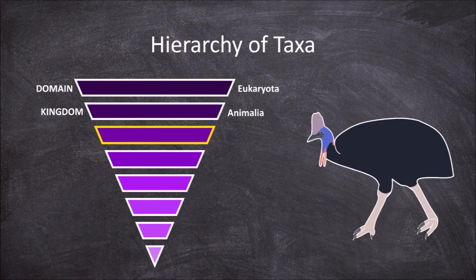The next smaller hierarchical taxon is the phylum level. The southern cassowary belongs to the phylum chordata. The next smaller hierarchical taxon is the class level. Our example belongs to the class aves, along with all other animals that are considered to be birds.